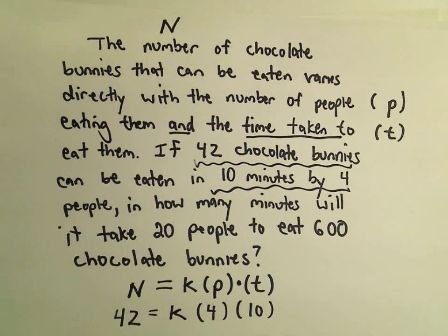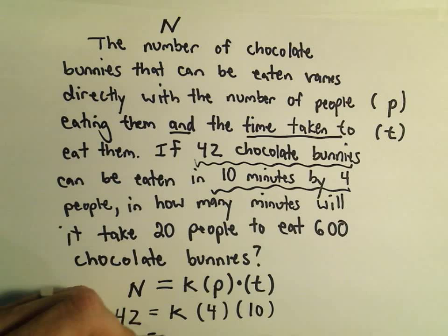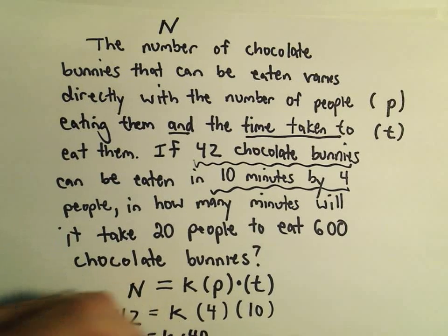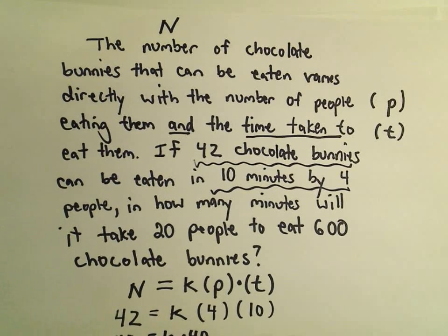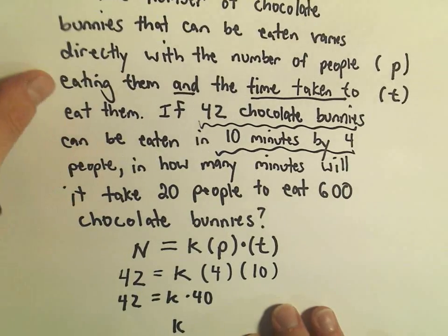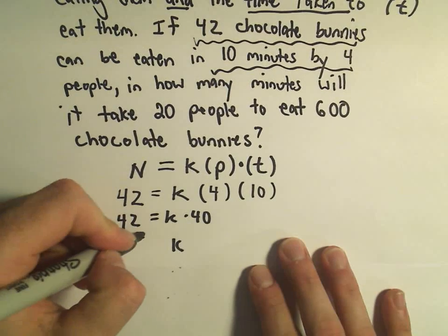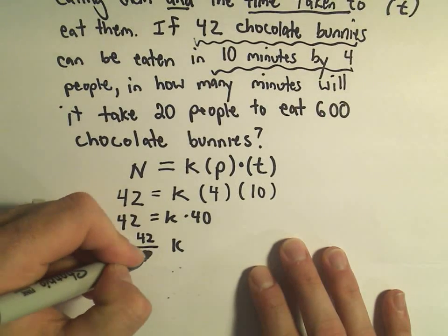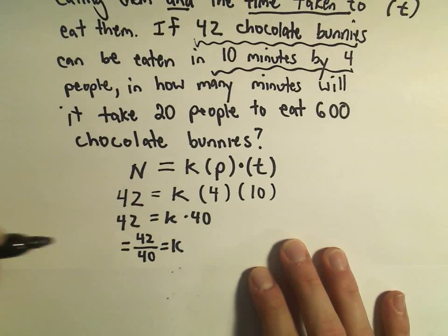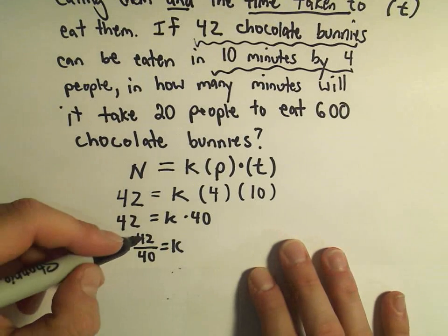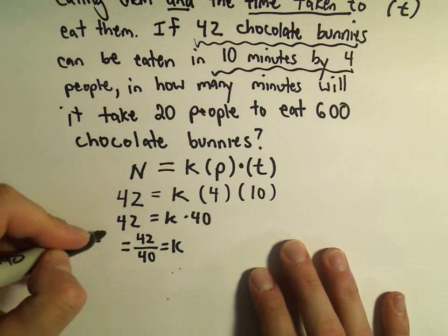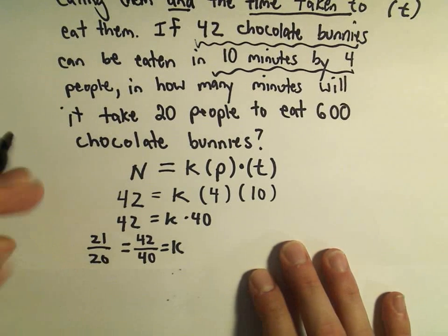So if we multiply, we get 42. We've got K times 40 on the right side. So in this case, if we divide by 40, we'll simply get 42 over 40. And certainly that's an even number, so we can divide both of those by two. It looks like we'll get 21 over 20 as K.